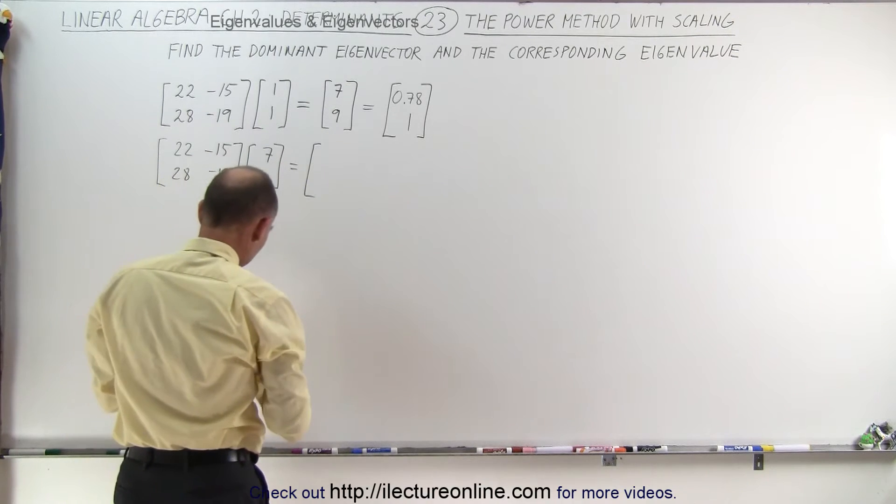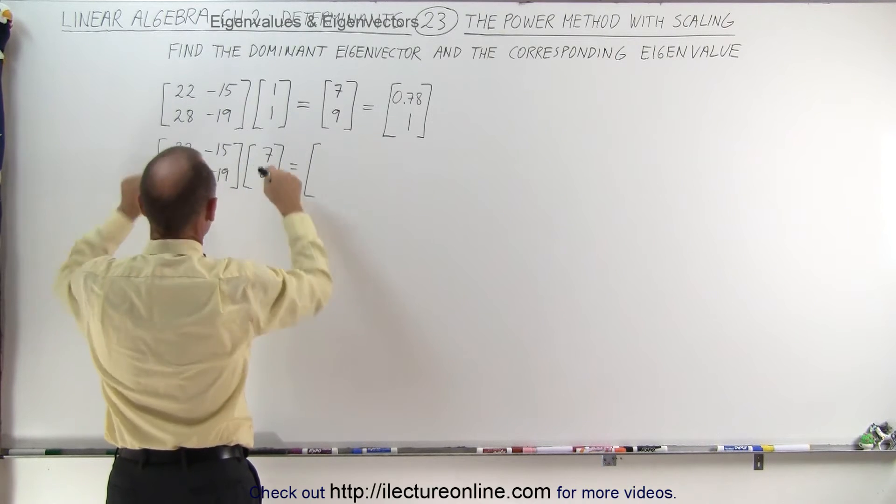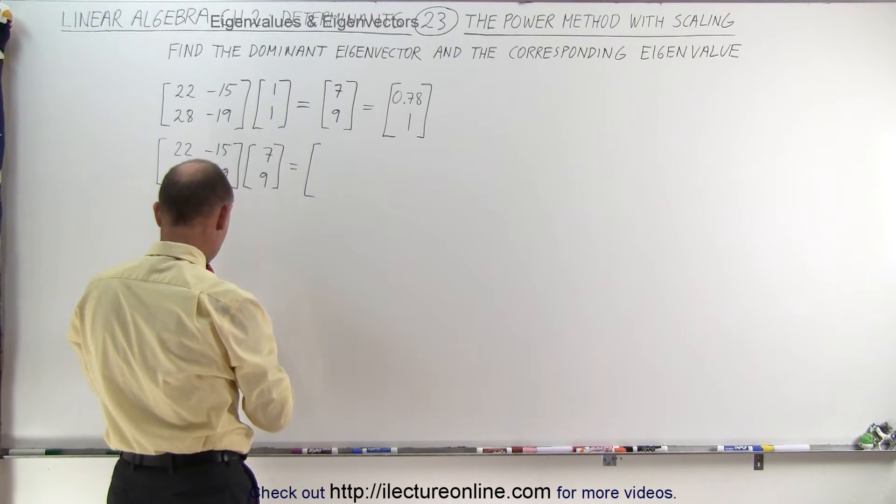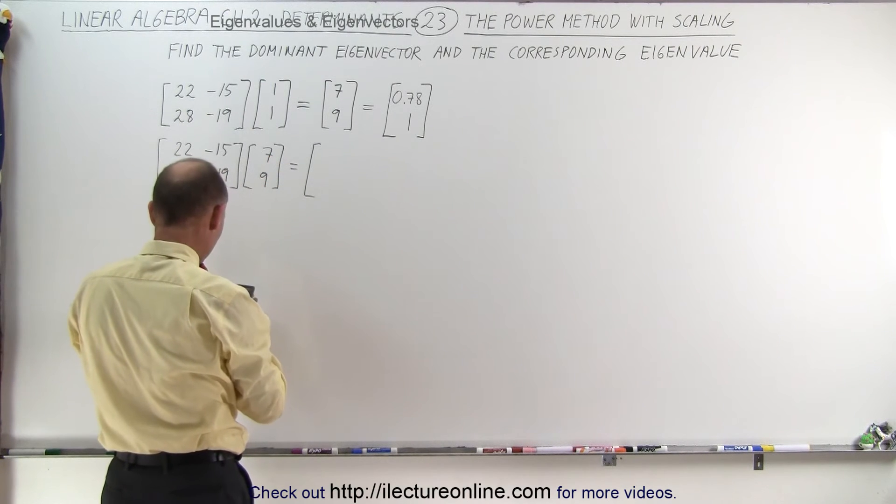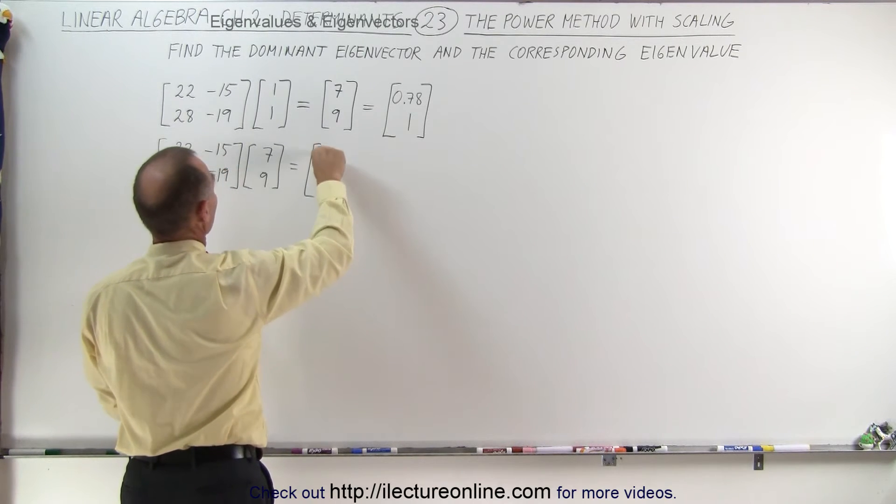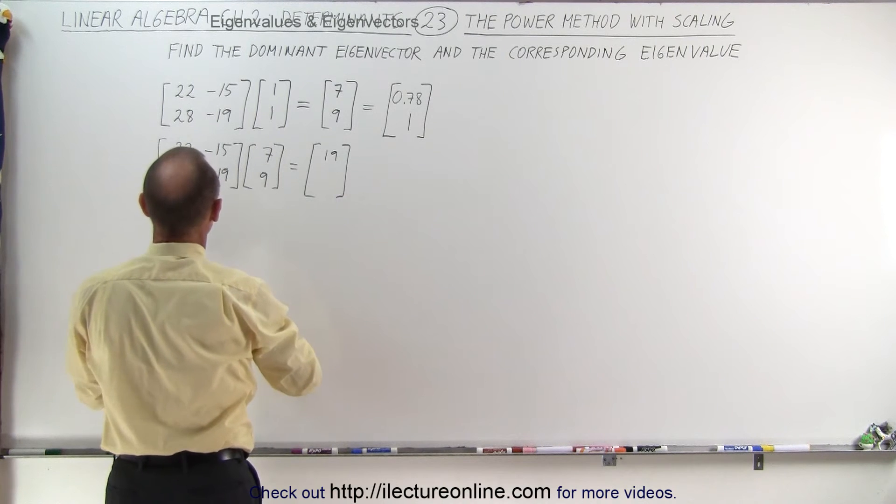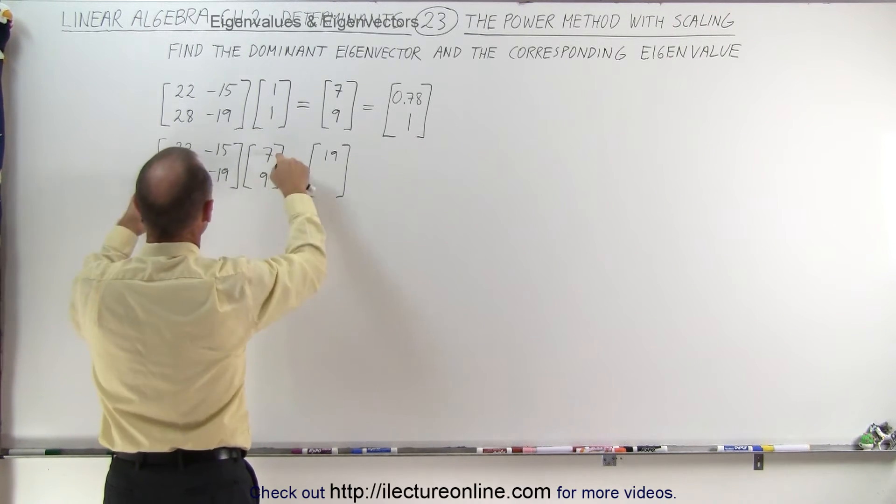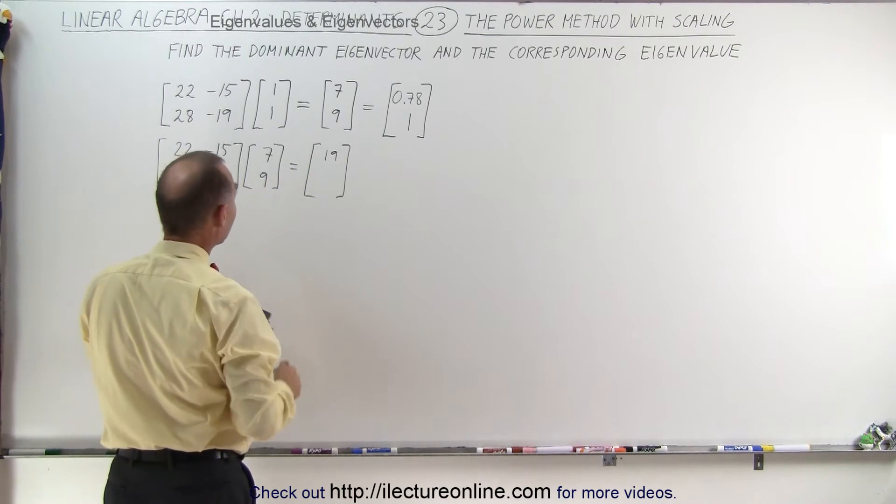All right so what does that become? I may need to calculate it we'll see. 7 times 22, yes let's bring out the calculators. 7 times 22 minus 15 times 9 and we get 19. The second one 28 times 7 and minus 9 times 19 and that gives us 25.